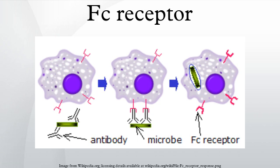FC-epsilon receptors: Two types of FcεR are known. The high-affinity receptor FcεRI is a member of the immunoglobulin superfamily and is found on epidermal Langerhans cells, eosinophils, mast cells, and basophils. As a result of its cellular distribution, this receptor plays a major role in controlling allergic responses. FcεRI is also expressed on antigen-presenting cells and controls the production of important immune mediators called cytokines that promote inflammation.